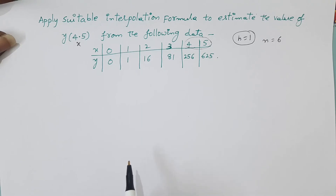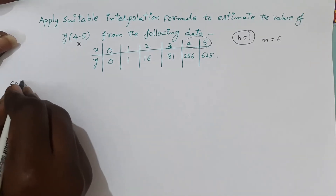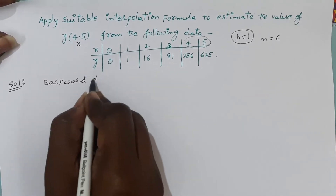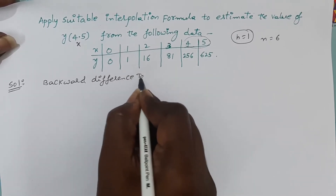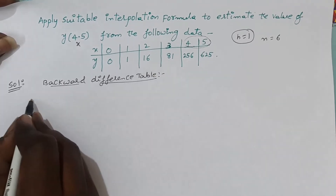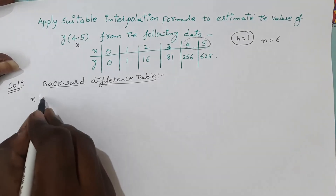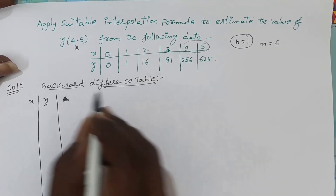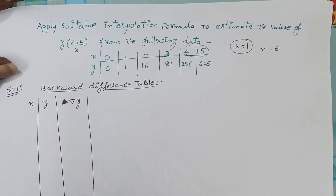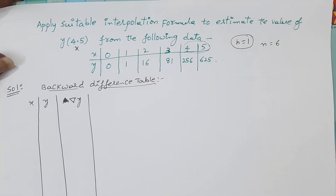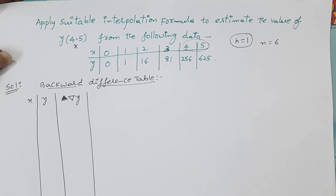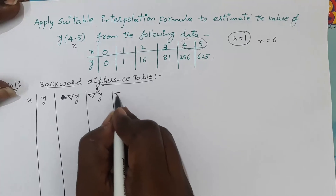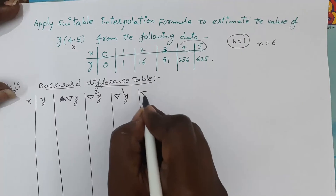Before applying Newton's backward interpolation formula, we should construct the backward difference table. We write the x values in the first column and y values in the second column. The backward differences are denoted by ∇y, whereas forward differences are denoted by Δy.